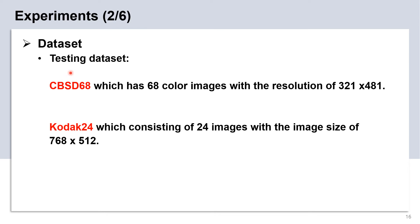For the testing datasets, we test on CBSD68 and Kodak24 datasets, which are widely used for evaluating model performance. Both of them are color image datasets, and we add certain Gaussian noise levels — sigma equals 10, 30, and 50 — the same as the validation set. Then we calculate the average PSNR and SSIM values across the datasets.